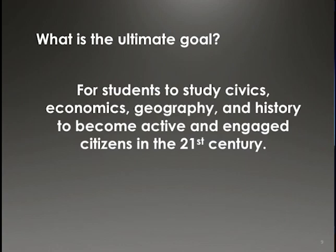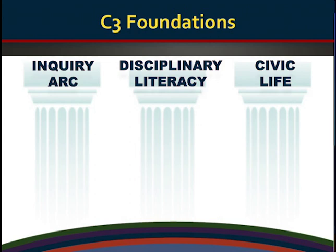The ultimate goal is for students to study civics, economics, geography, and history so they'll ultimately become active and engaged citizens in the 21st century. We believe social studies taught in this way will really help impact their world. The framework is based on three foundations around an inquiry arc. We talk about disciplinary integrity of the separate subjects and disciplinary integrity of literacy that's front and center, all gearing this to inform a participatory civic life.